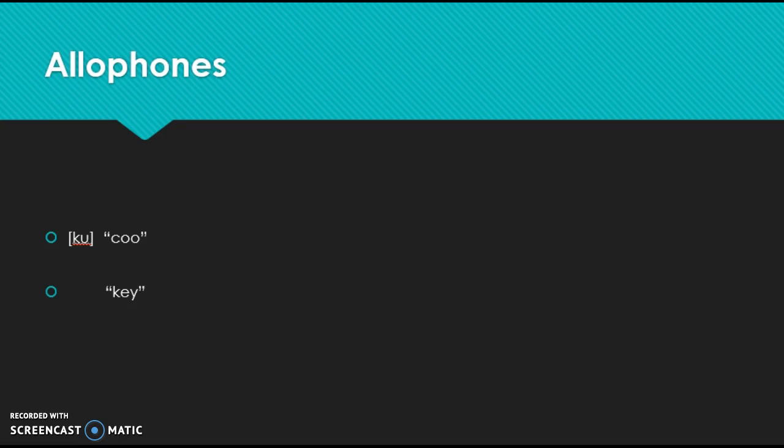But you really have to say it to try to recognize the difference between phonemes and allophones. Say ku, then key. Ku, ku, key. Ku, key. Do you feel that your tongue moves forward a little bit? Ku, key.